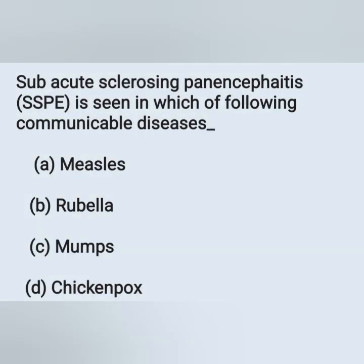Moving on: Subacute sclerosing panencephalitis — SSPE — is seen in which of the following communicable diseases? Option A: measles. Option B: rubella. Option C: mumps. Option D: chickenpox.